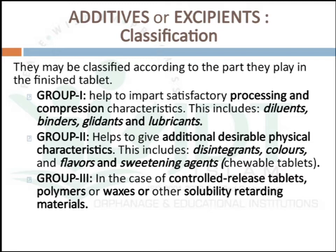Group one additives are substances which help to impart satisfactory processing and compression characteristics of a tablet. These include diluents, binders, glidants, and lubricants. Group two substances help to give additional desirable physical characteristics, including disintegrants, colors, flavors, and sweetening agents for chewable tablets. Group three substances are used in controlled release tablets — polymers, waxes, or other solubility-retarding materials are examples.